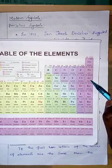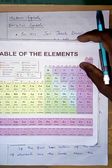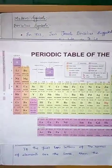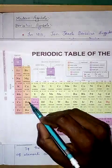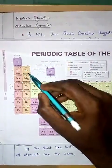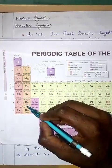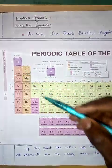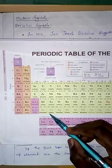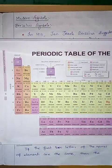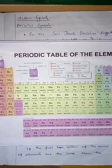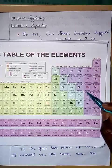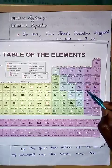For barium and beryllium, both start with B, so the second letter is chosen: Ba for barium and Be for beryllium. Similarly for bismuth and bromine and many other such cases where elements share the same first letter.